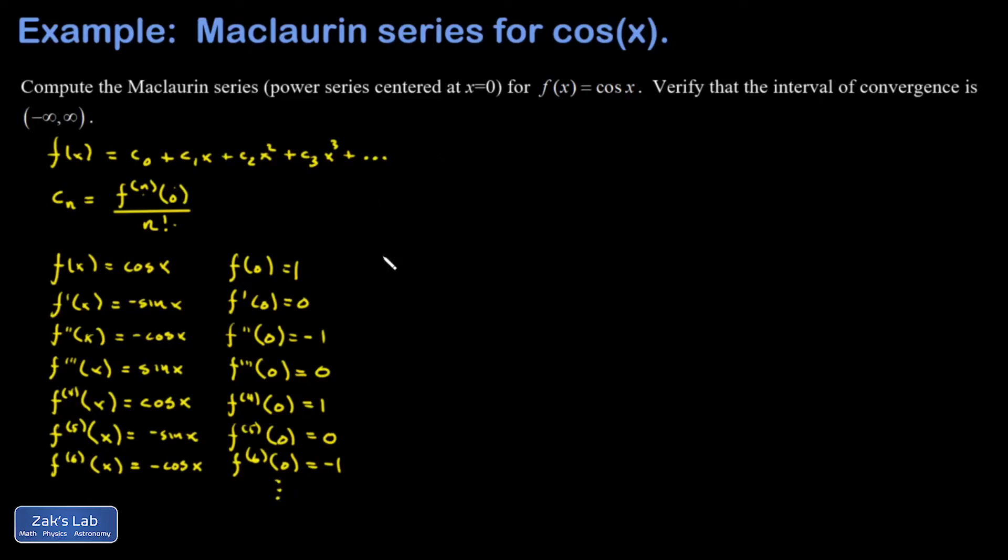Now I have to get the c's. So c_0 is going to be f(0) over zero factorial, but zero factorial is one. c_1 vanishes. c_2 is going to be negative one over two factorial.